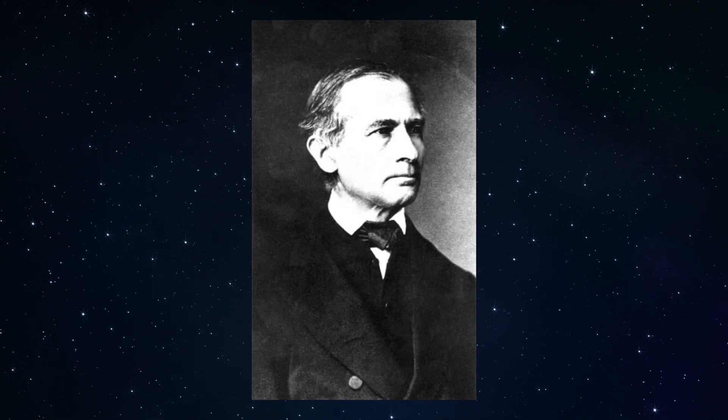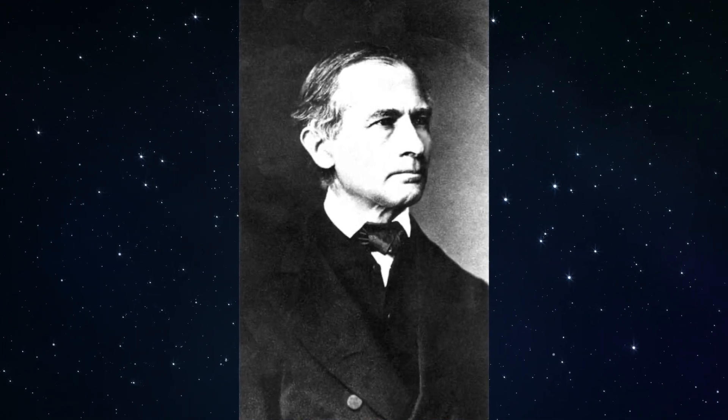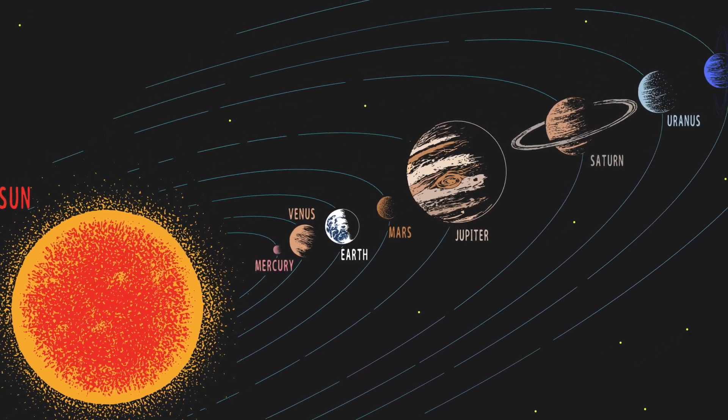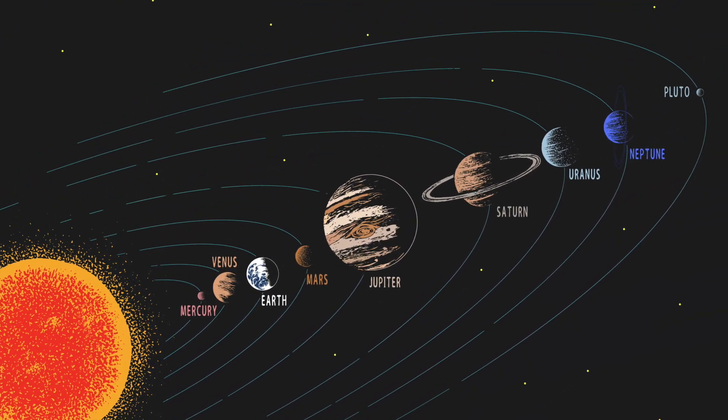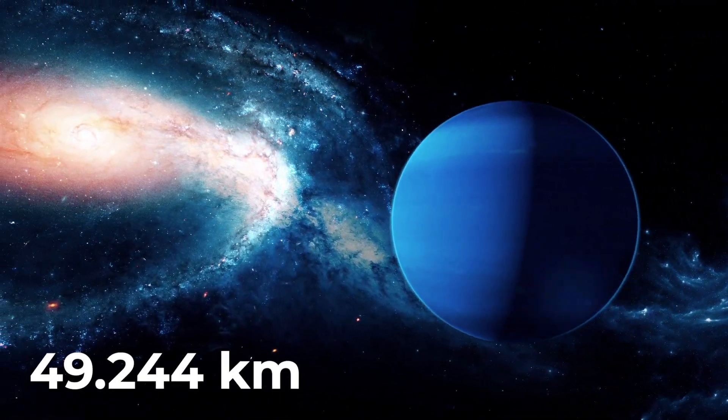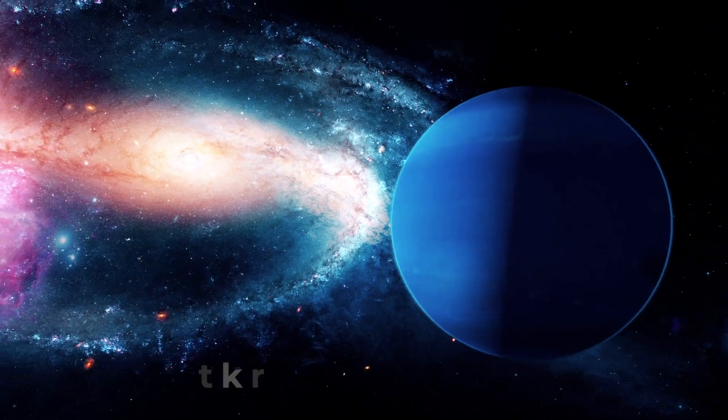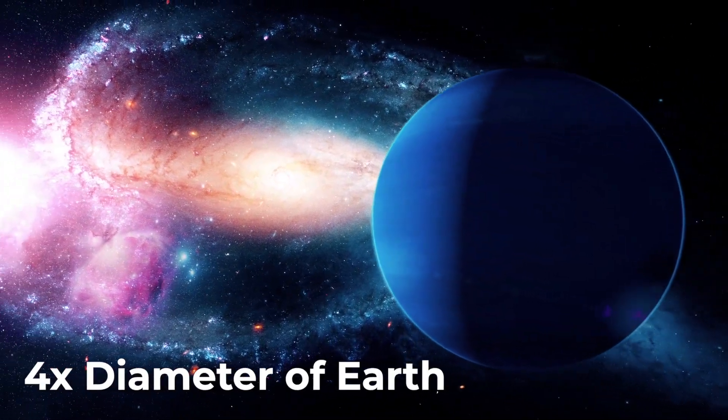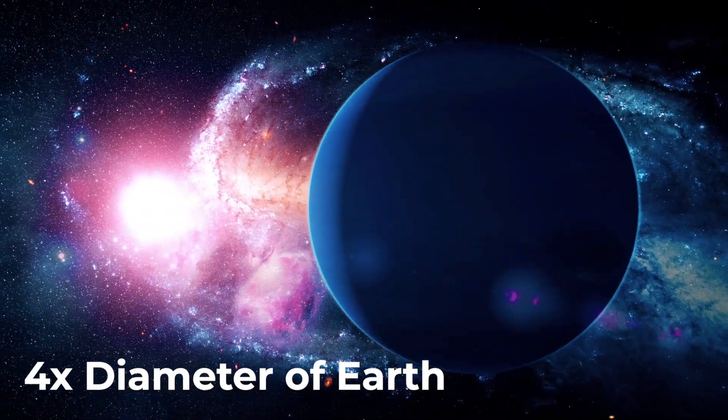At that time, the astronomer Johann Gottfried Gale succeeded in immortalizing Neptune, which is about 4.5 billion kilometers away from us, on the star charts. The diameter of the planet is about 50,000 kilometers. This value corresponds to about 4 times the diameter of the Earth, and thus makes Neptune the fourth largest planet in our solar system.